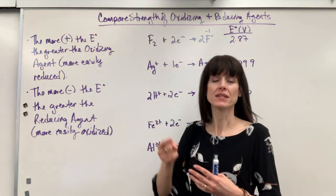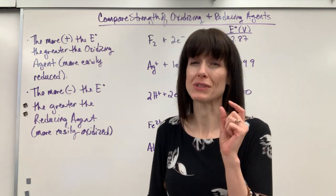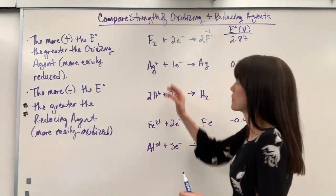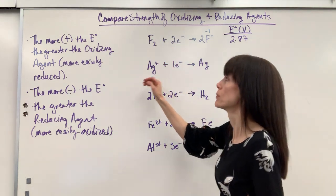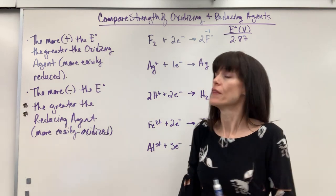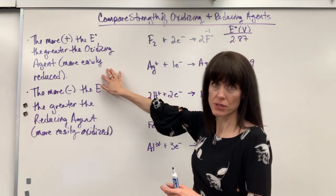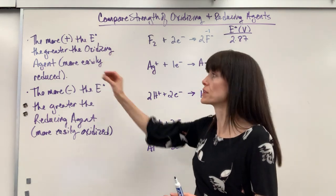First, the more positive the E value on a standard reduction potential table, and the key word there is reduction. The table is always written as the half reaction gaining electrons. So the more positive the E value on a standard reduction potential table, the more easily it's reduced, which means it is a stronger oxidizing agent.